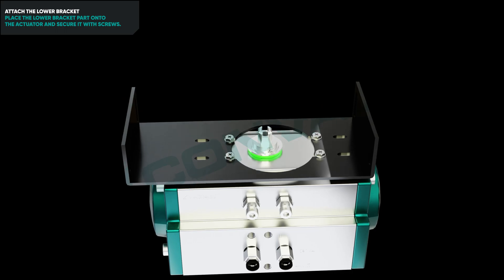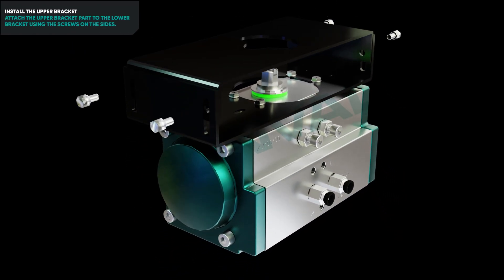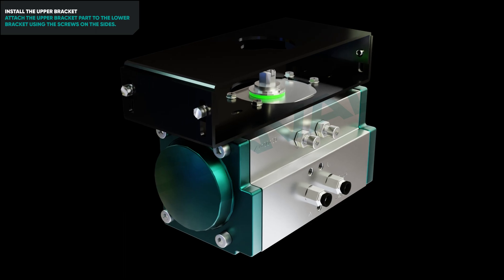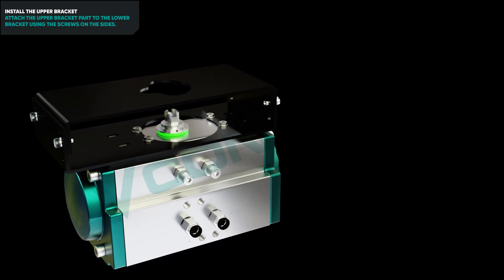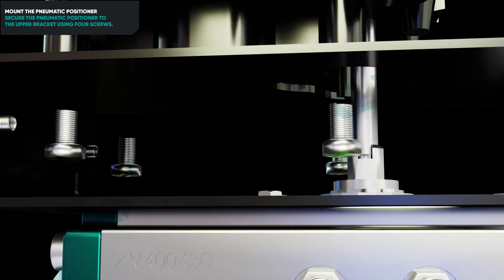Place the lower bracket part onto the actuator and secure it with screws. Attach the upper bracket part to the lower bracket using the screws on the sides. Secure the pneumatic positioner to the upper bracket using four screws.